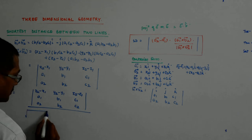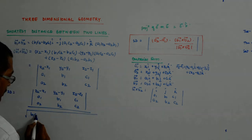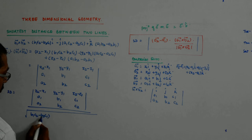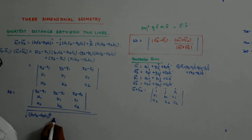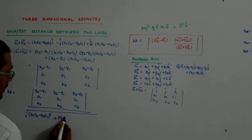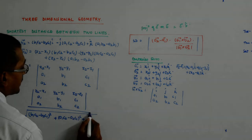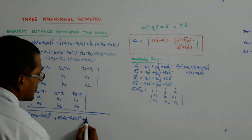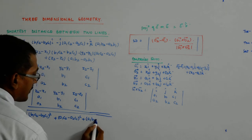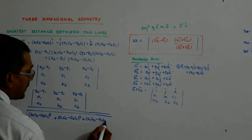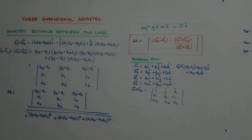Will be what? b1 c2 minus b2, c1 whole square plus a1, c2 minus a2, c1 whole square, c1 plus a1, b2 minus a2, b1 whole square.